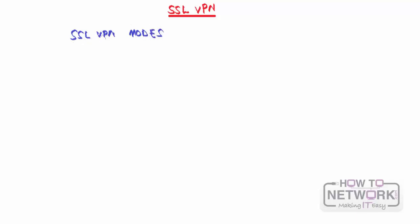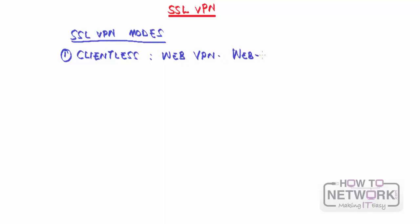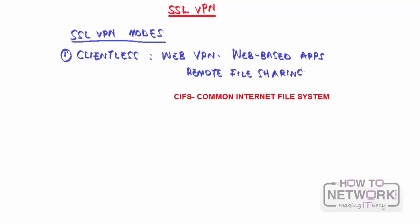Cisco's implementation of SSL VPN can operate in three modes. The first is Clientless, also known as Web VPN. Clientless supports web-based applications - it feels like browsing through links. This includes web-based applications like internet and database access, and you can also have remote file sharing using CIFS. Clientless works solely at Layer 7, the application layer.